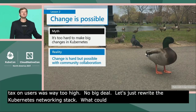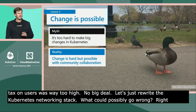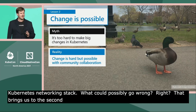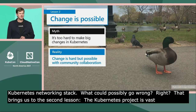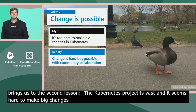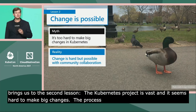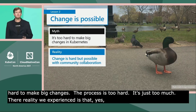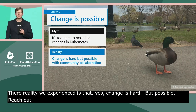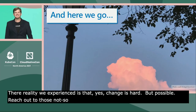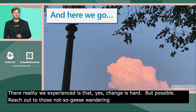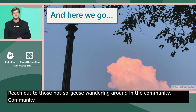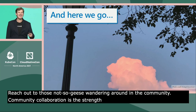That brings us to the second lesson: the Kubernetes project is vast, and it seems hard to make big changes. The process is too hard, it's just too much. The reality we experienced is that yes, change is hard, but possible. Reach out to those not-so-horrible geese wandering around in the community — community collaboration is the strength of Kubernetes. We iterate and learn.